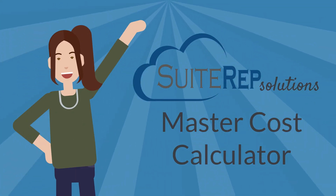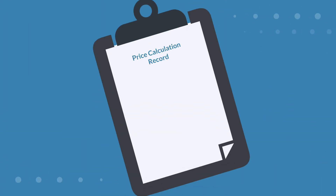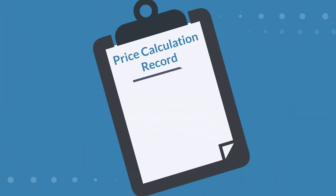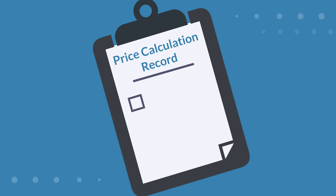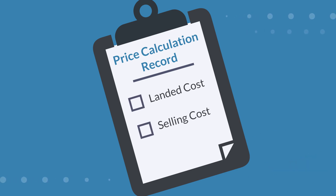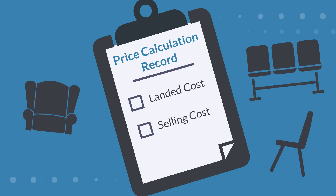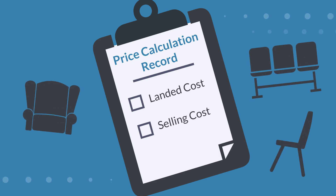Here's how it works. You can start by creating a price calculation record. On this record, you set all the variables that affect the landed cost and the selling cost. Then add items that you want this price calculation to apply to.